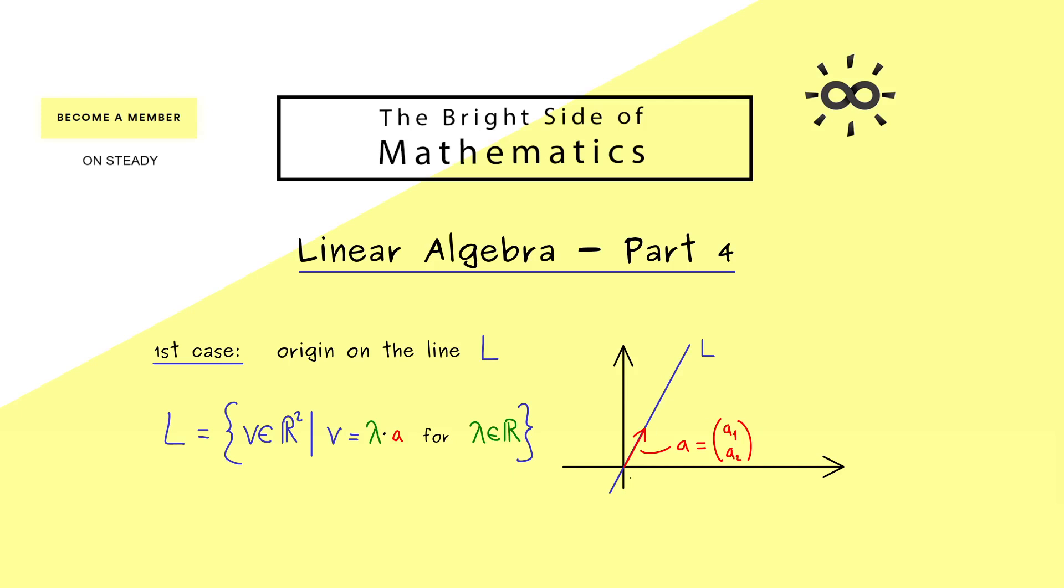However another possibility would be to take a vector that is orthogonal to A. So you already know we need the inner product to talk about orthogonality. So for the moment let's call this new vector here simply N. And now what you should see is this N is perpendicular to the whole line L. Hence this is an alternative description for the line L.